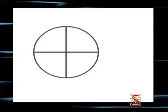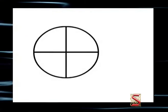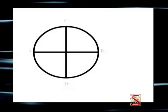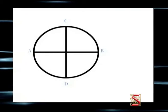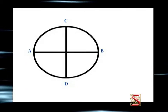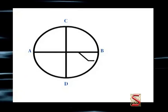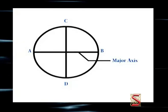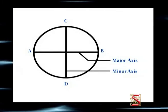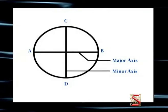Now what is an ellipse? Let us look at an ellipse. You can see there are two axes in an ellipse: AB and CD. The length of AB is greater than the length of CD. Hence AB is said to be the major axis and CD is said to be the minor axis.